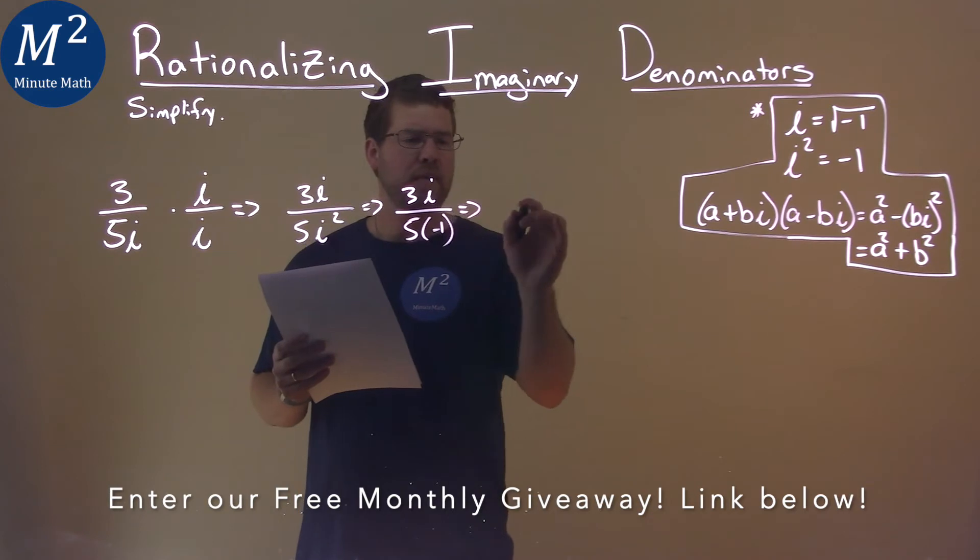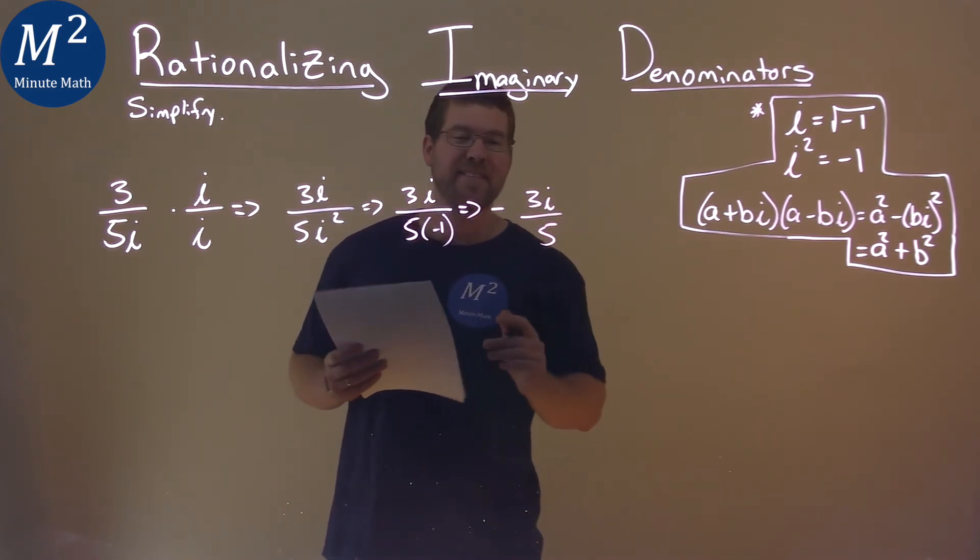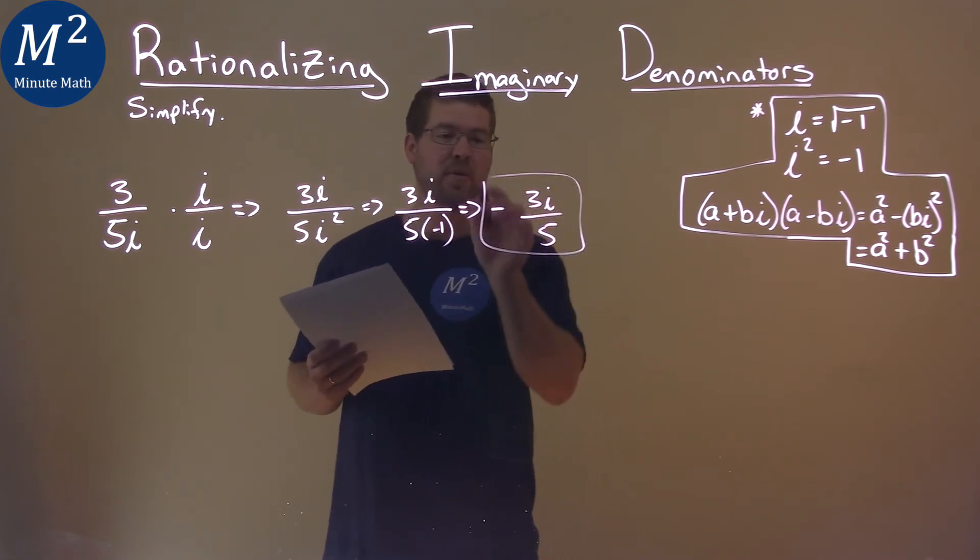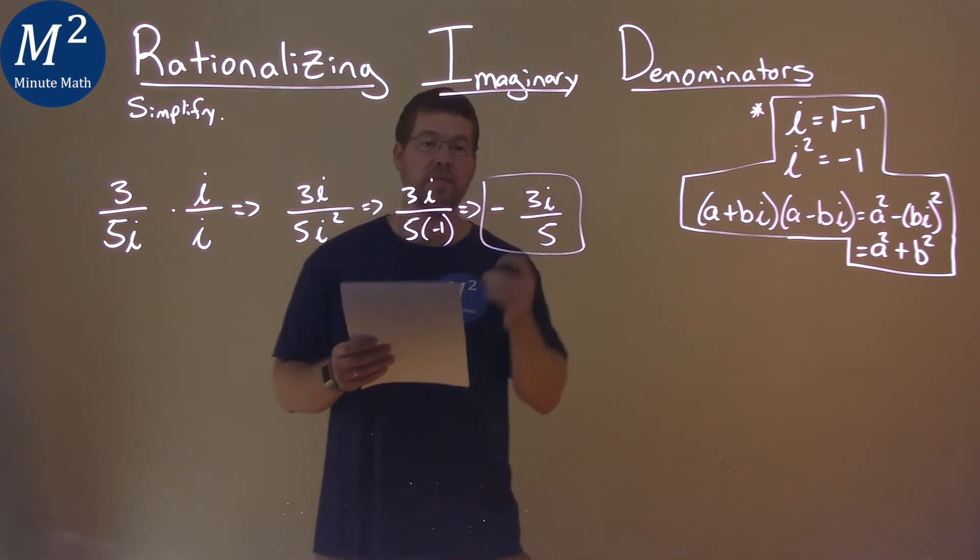So we can write this as negative 3i in the numerator over 5. There's nothing we can really simplify anymore, so our final answer is negative 3i over 5.